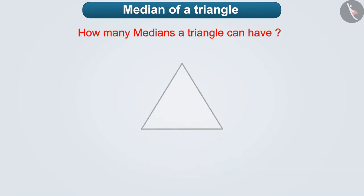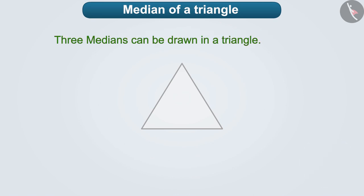Can you tell how many medians a triangle can have? Think about it. Joining these vertices with the midpoints of their opposite sides, we can get three medians.